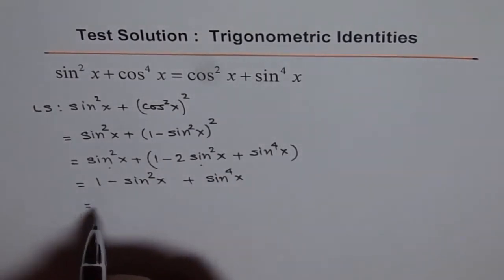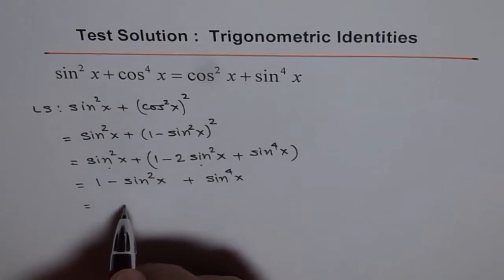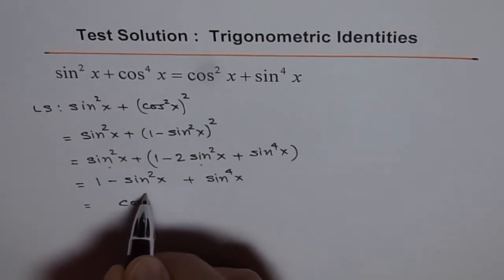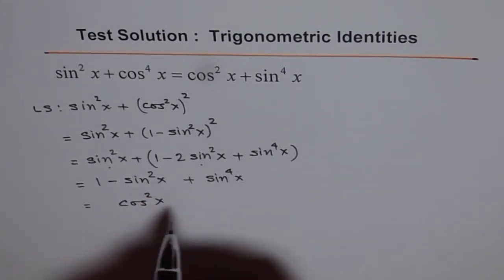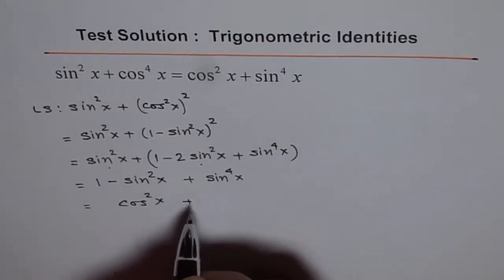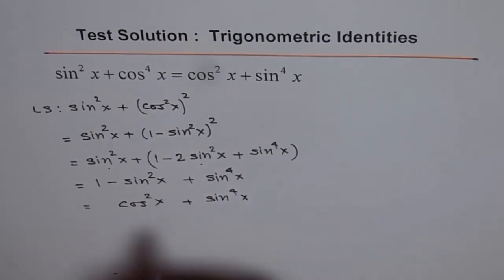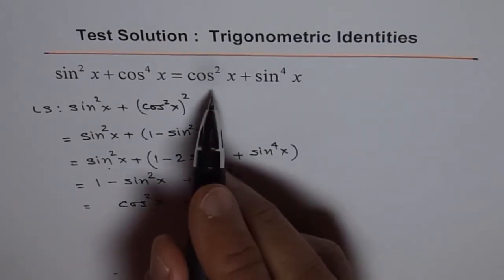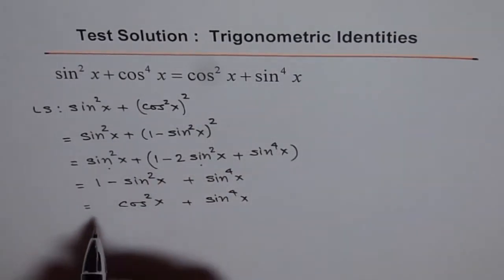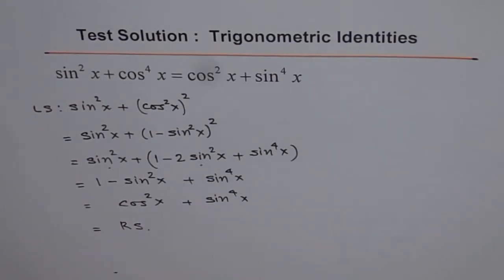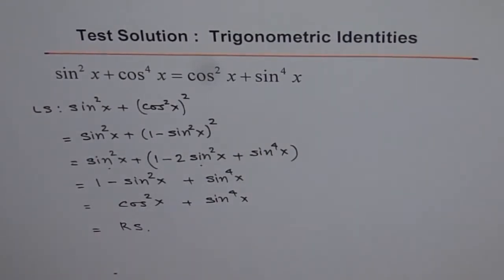And 1 minus sine squared x is cos squared x. So we have cos squared x plus sine to the power of 4x, and that is our right side. This is how we prove this identity.